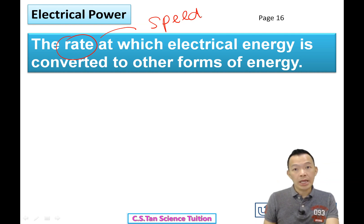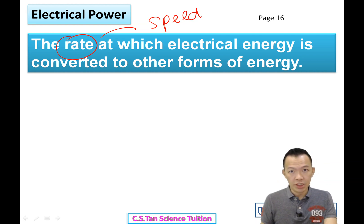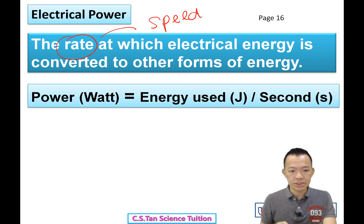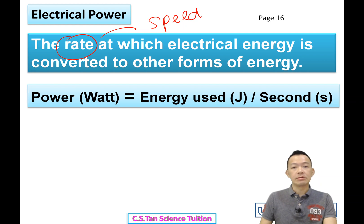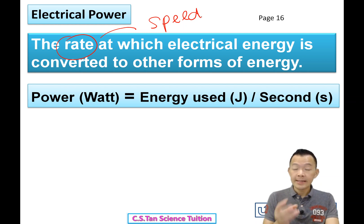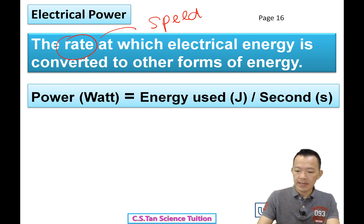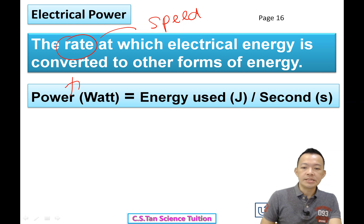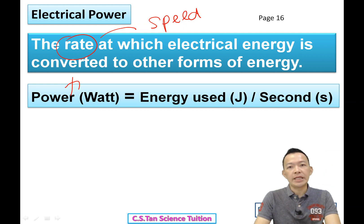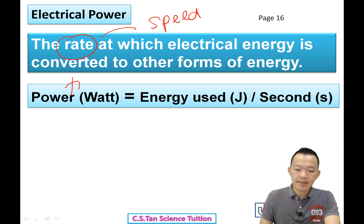Power actually has a formula. Power is equal to energy used per second. So what is power? Power equals energy used per second — meaning how many joules of electrical energy will be used in one second.